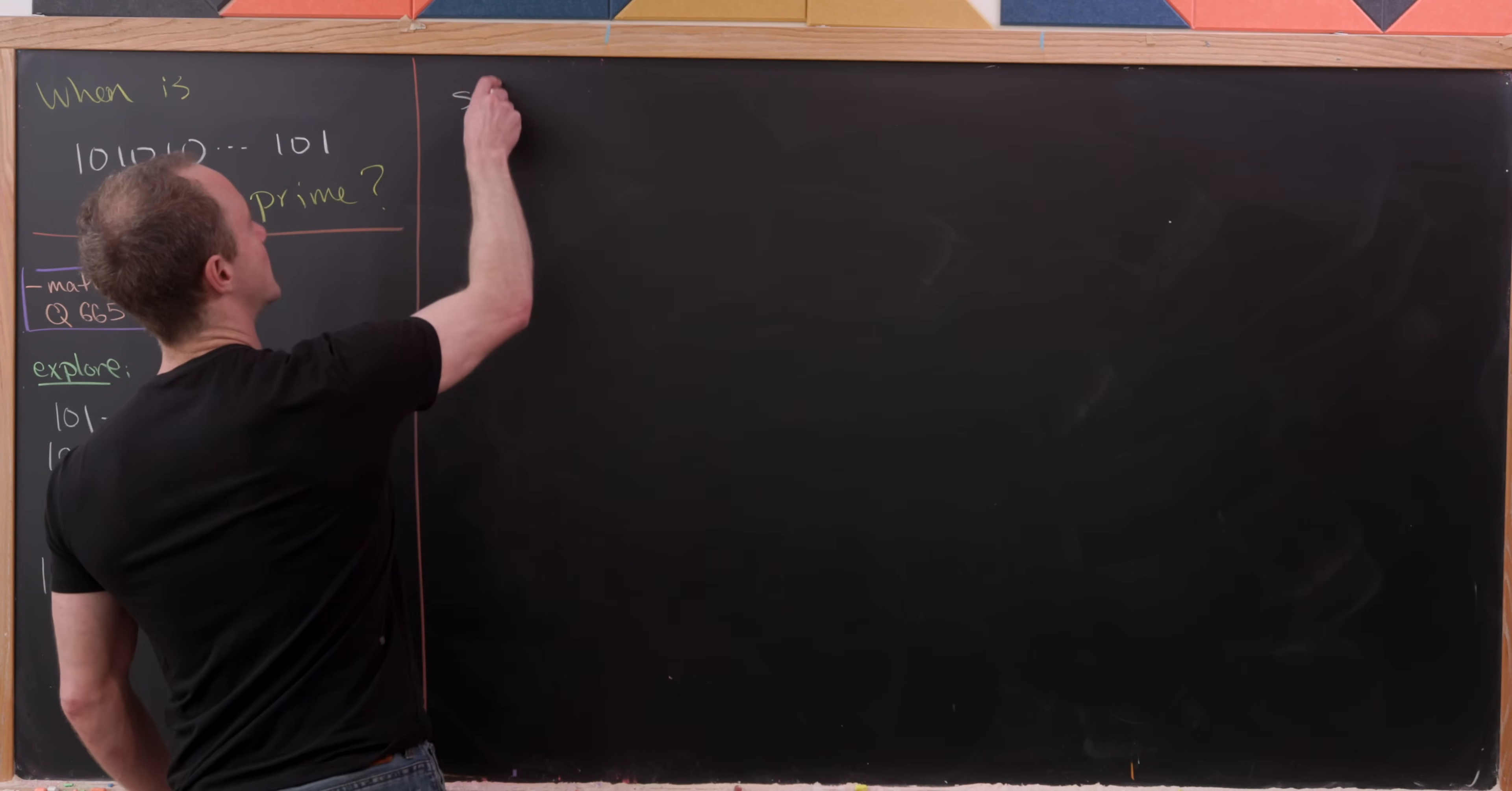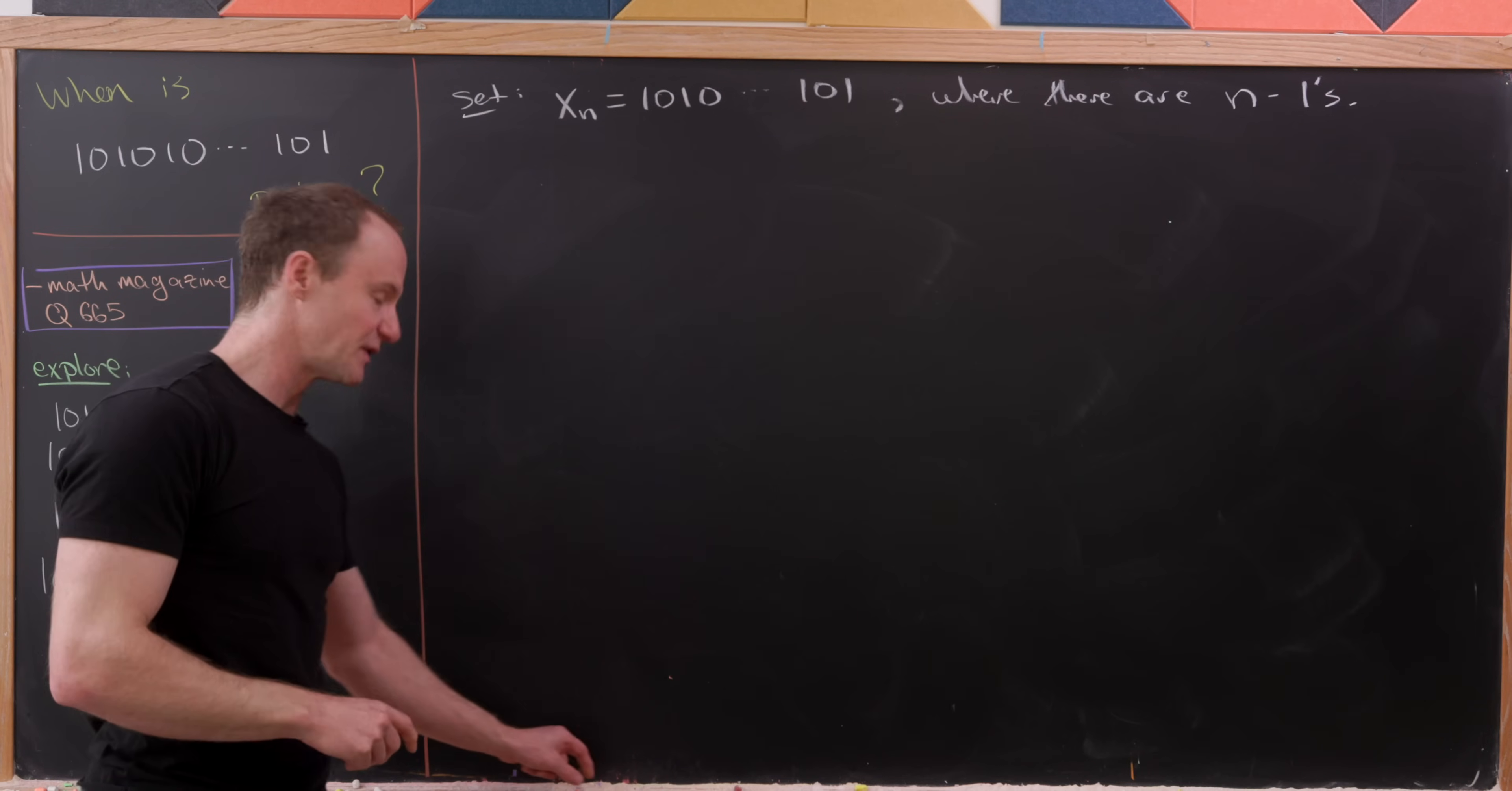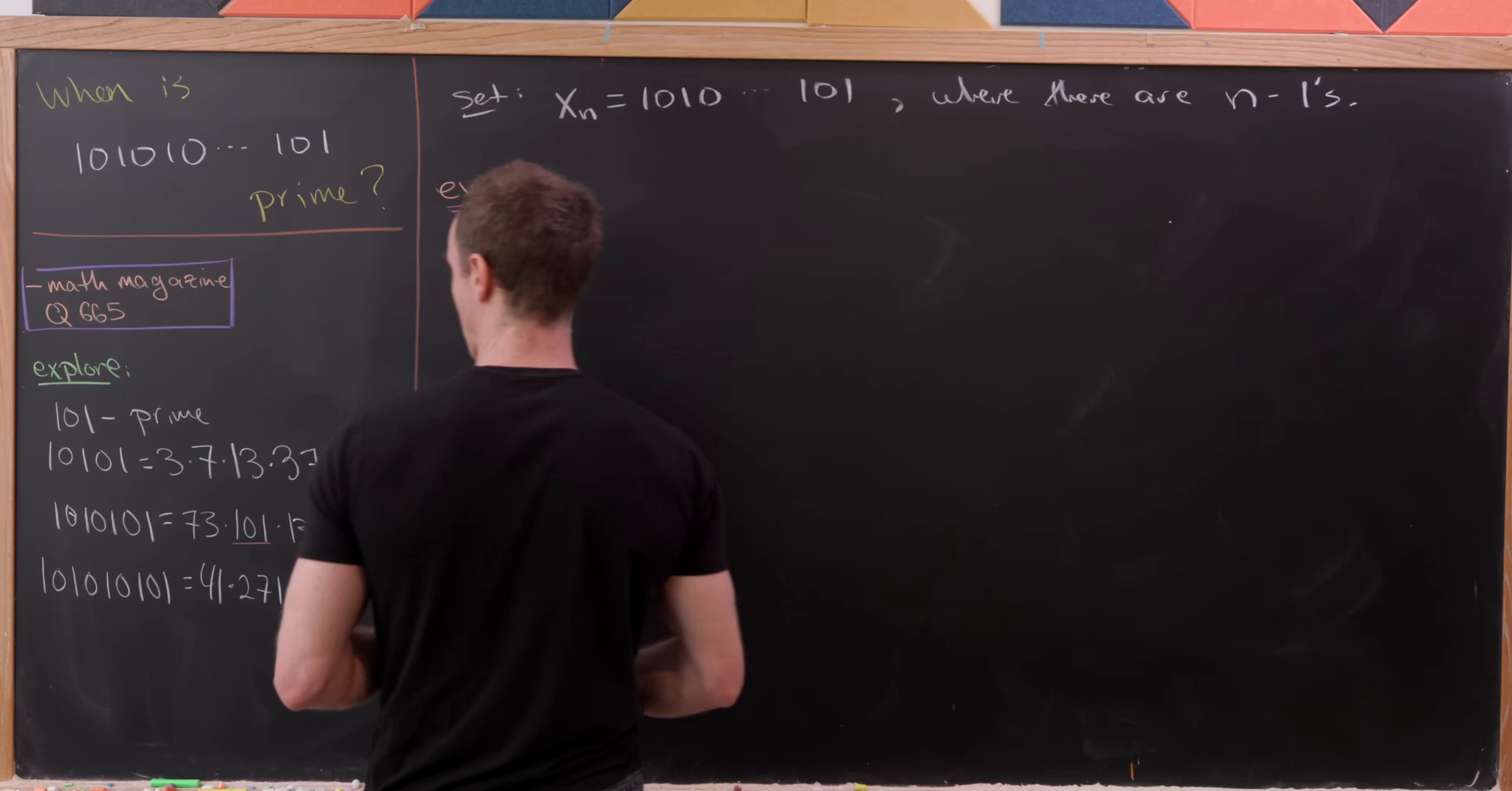So let's introduce a little bit of notation. Let's set x sub n equal to 1, 0, 1, 0, and so forth, 1, 0, 1, where there are n different ones. And now I'm going to split this into two cases, the case when the index is even and the case when the index is odd. And let's start by looking at the case when the index is even.